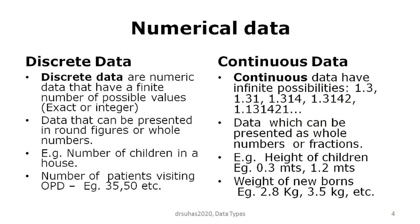Numerical or quantitative data can be further classified into discrete data and continuous data. Discrete data are numeric data that have a finite number of possible values — exact numbers, expressed as integers. They will not take any fractions. For example, if you ask how many children are in a classroom, you say either 20 or 21 — there is no 20.1 or 21.7. There cannot be any fractions or decimals in discrete data; they are always expressed as whole numbers.